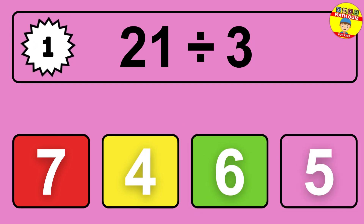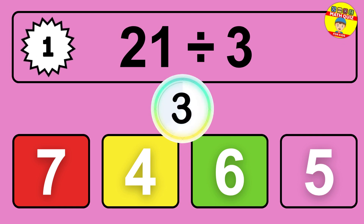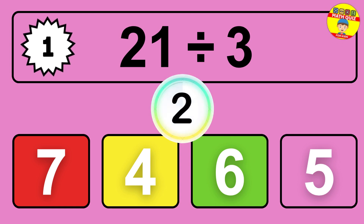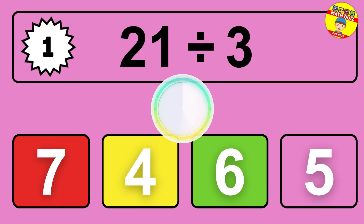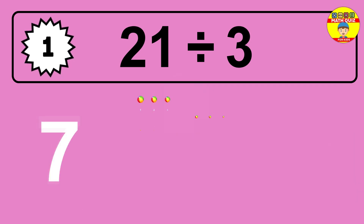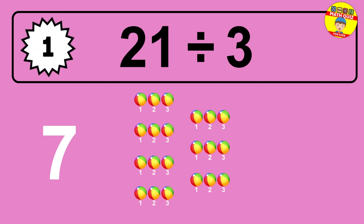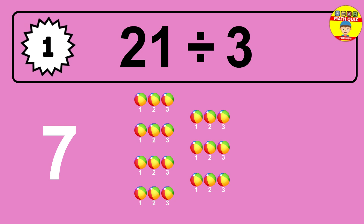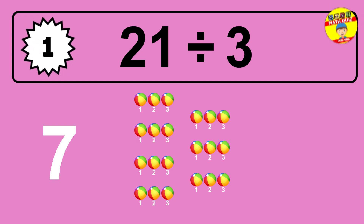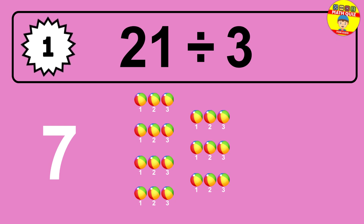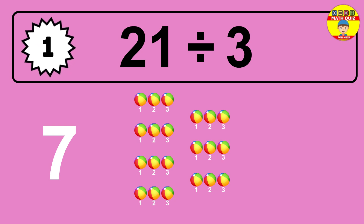What is 21 divided by 3? Picture this: you have 21 objects to divide into groups of 3. How many groups can you make? Let's think about it. Ready to find out? Let's break it down. Let's imagine you have 21 objects. Can you picture them lined up?